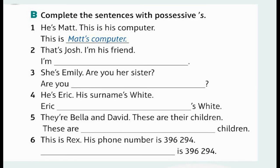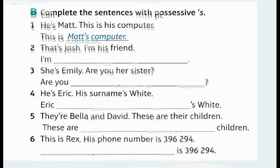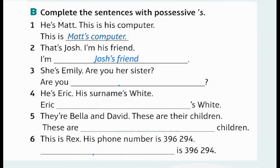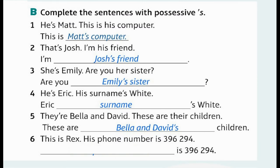Complete the sentences with possessive 's. 1. He's Matt. This is his computer. This is Matt's computer. 2. That's Josh. I'm his friend. I'm Josh's friend. 3. She's Emily. Are you her sister? Are you Emily's sister? 4. He's Eric. His surname's White. Eric's surname is White. 5. They're Bella and David. These are their children. These are Bella and David's children.